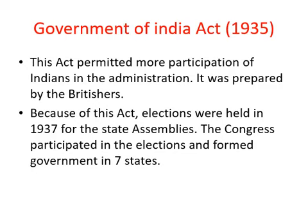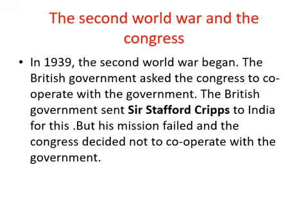Is act ke through elections hue 1937 mein state assembly mein, jismein Congress ne participate kiya aur apni seven states mein government banayi. The Congress participated in the elections and formed government in seven states.